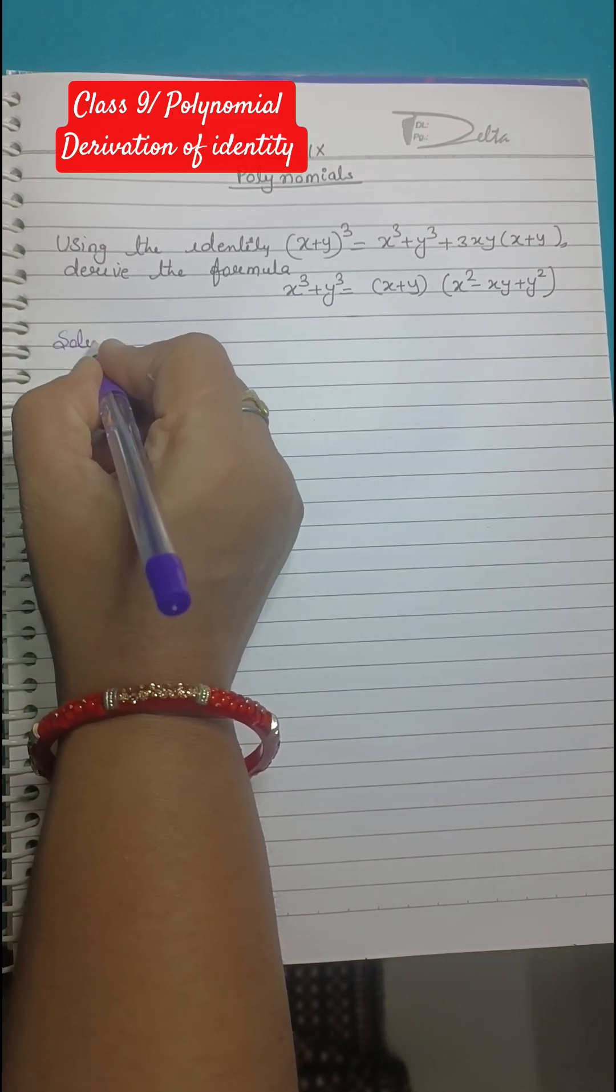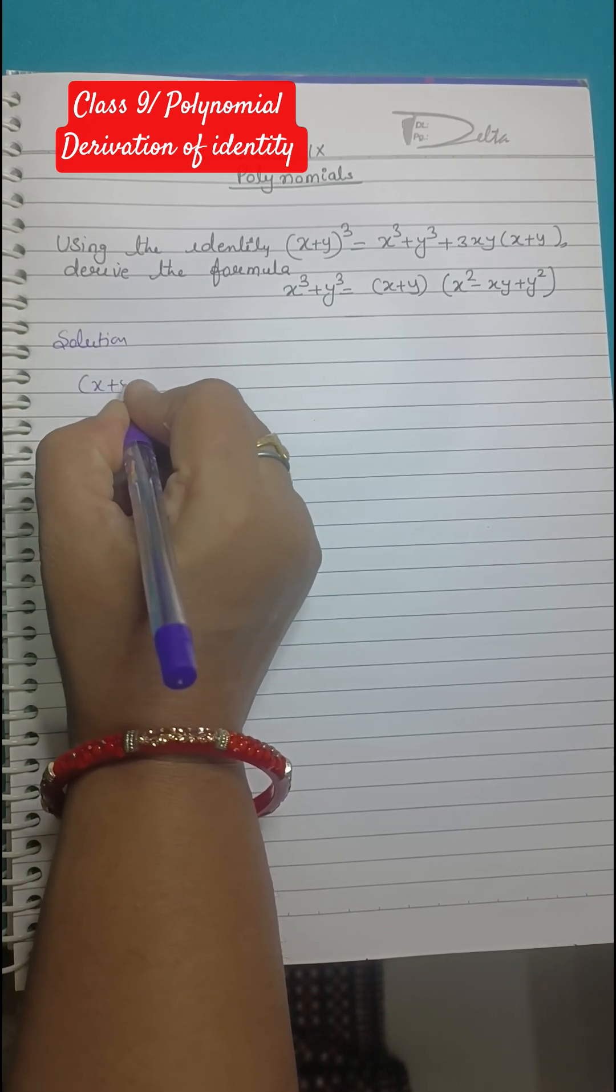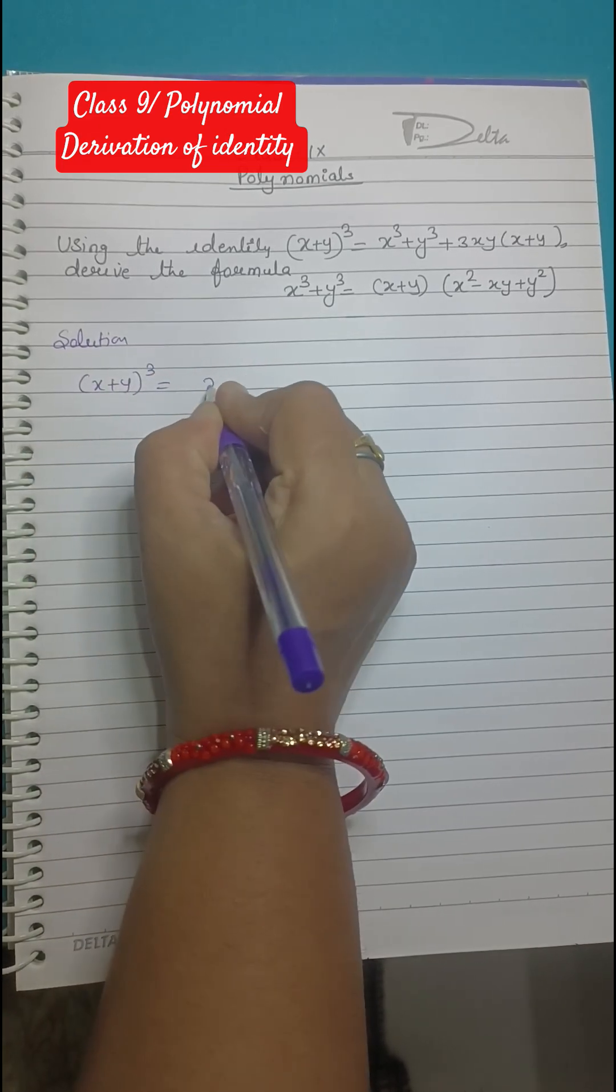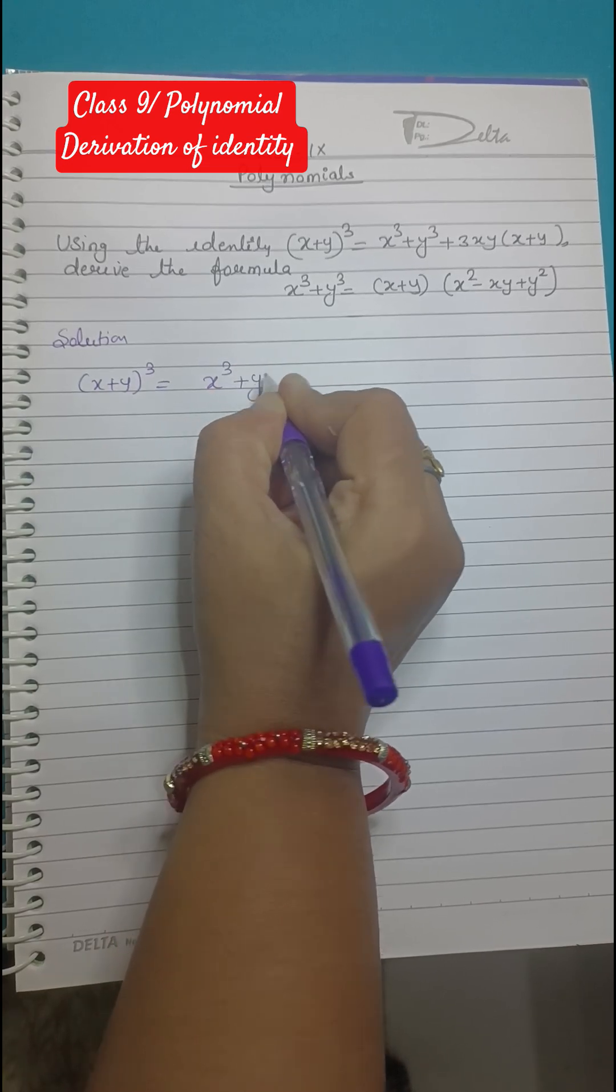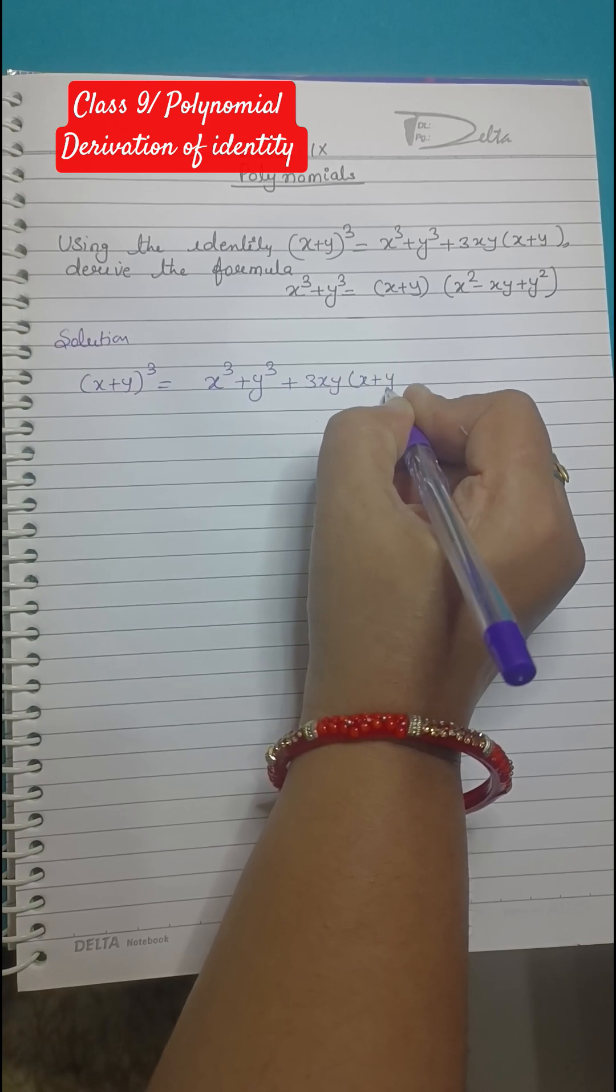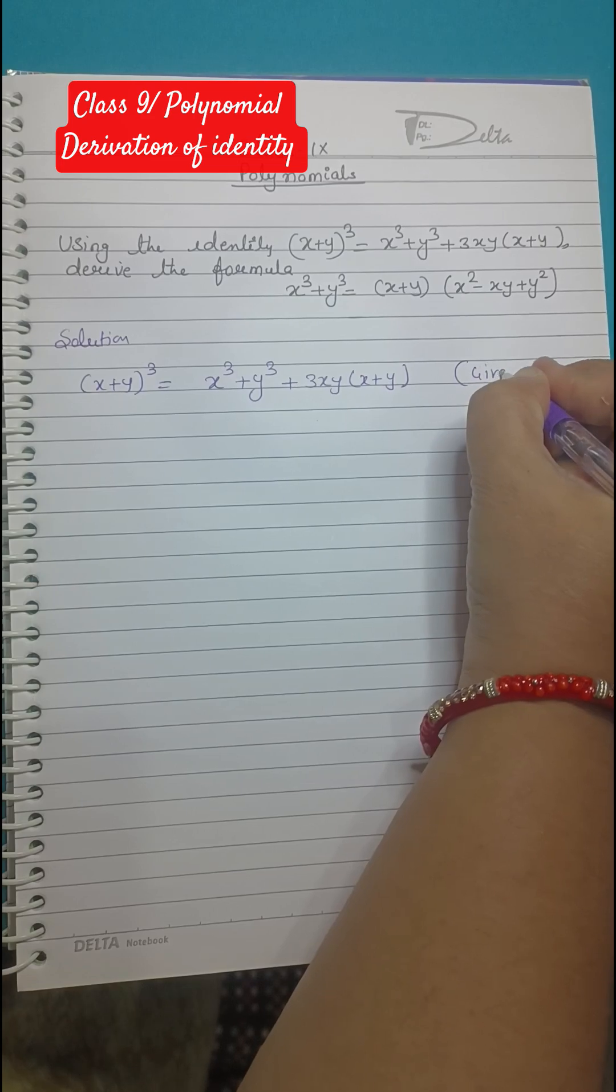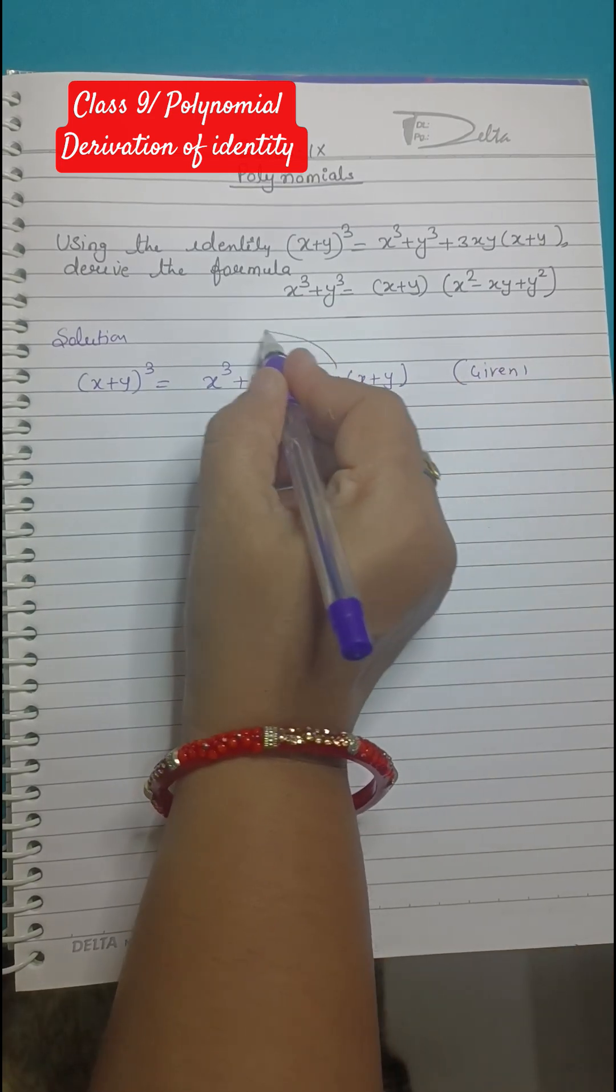So how we are going to do the solution? Just start. What is given to us: (x+y)³ = x³ + y³ + 3xy(x+y). This is given to us. Now do the transposition.